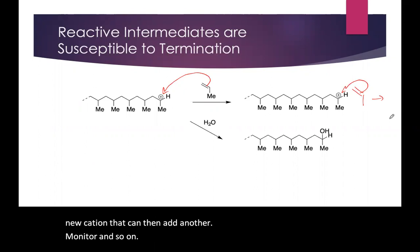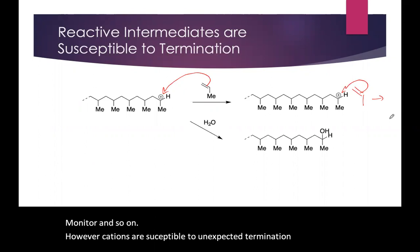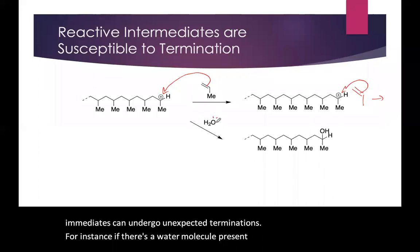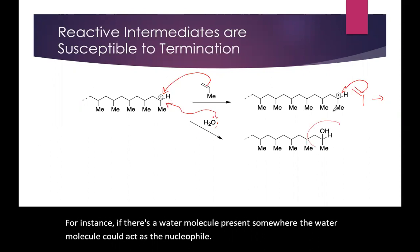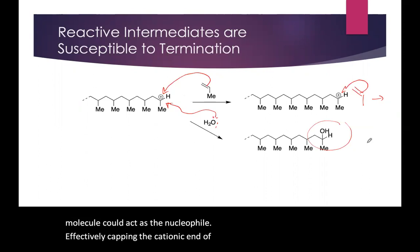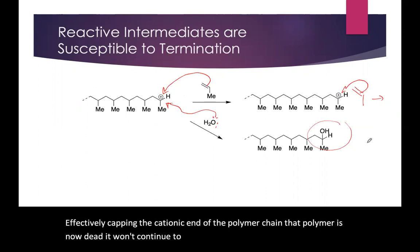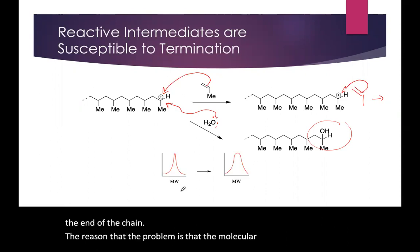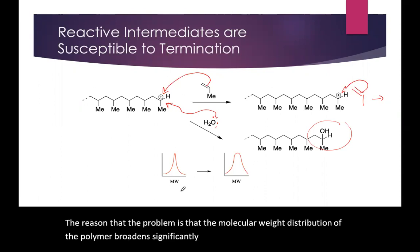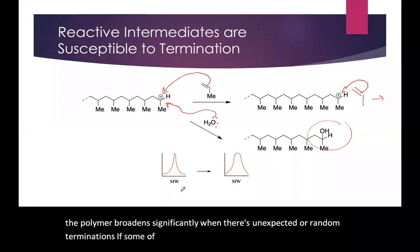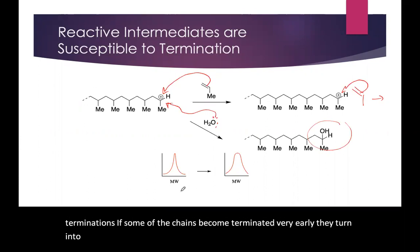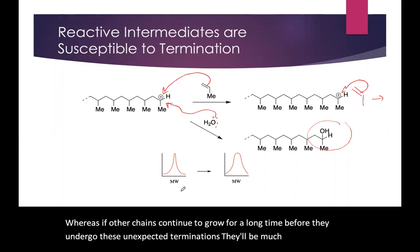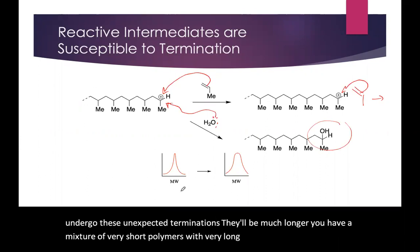However, cations are susceptible to unexpected termination. All reactive intermediates can undergo unexpected terminations. For instance, if there's a water molecule present, it could act as the nucleophile, effectively capping the cationic end of the polymer chain. That polymer is now dead — it won't continue to grow because there's no longer a cation at the end of the chain. This is a problem because the molecular weight distribution of the polymer broadens significantly when there are random terminations. Some chains become terminated very early and turn into short polymers, while others continue to grow much longer, giving a mixture of very short and very long polymers whose properties are hard to predict.